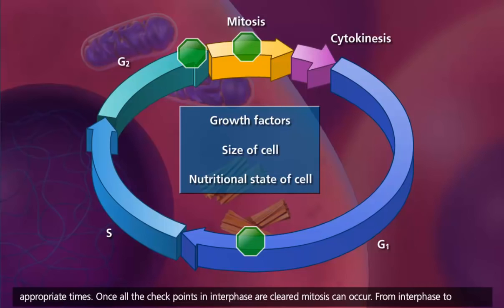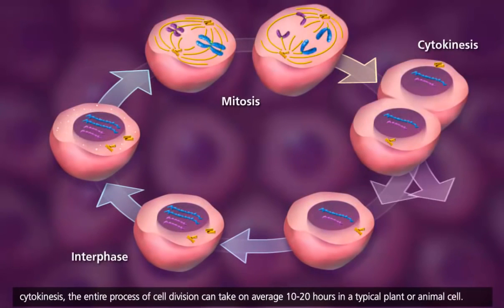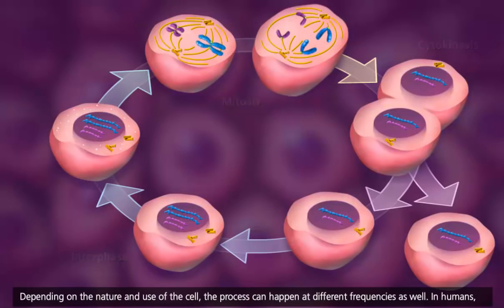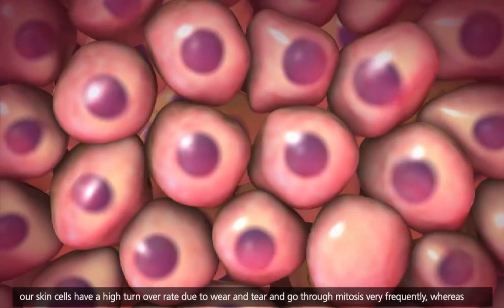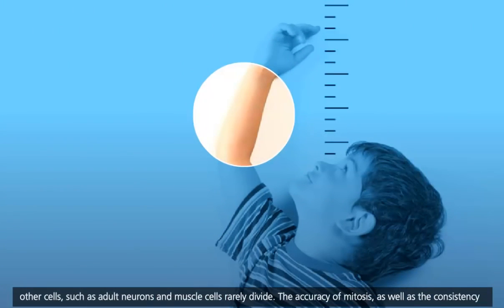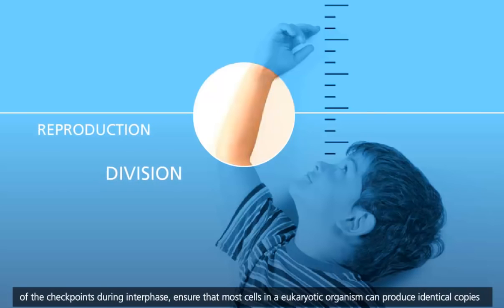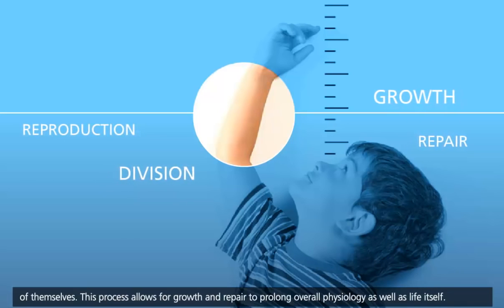Once all the checkpoints in interphase are cleared, mitosis can occur. From interphase to cytokinesis, the entire process of cell division can take on average 10 to 20 hours in a typical plant or animal cell. Depending on the nature and use of the cell, the process can happen at different frequencies as well. In humans, our skin cells have a high turnover rate due to wear and tear and go through mitosis very frequently, whereas other cells, such as adult neurons and muscle cells, rarely divide. The accuracy of mitosis, as well as the consistency of the checkpoints during interphase, ensure that most cells in a eukaryotic organism can produce identical copies of themselves. This process allows for growth and repair to prolong overall physiology, as well as life itself.